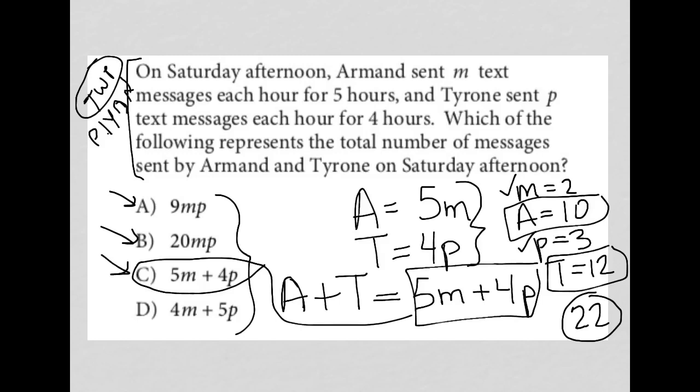However, when I plug it into C, 5 times M would give me 10. 4 times 3 would give me 12. And 10 plus 12 is 22. So with C, I would get that correct.